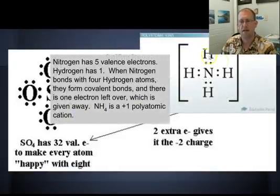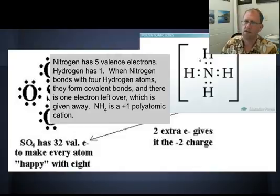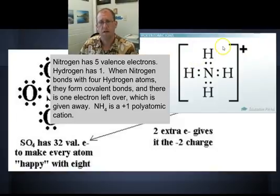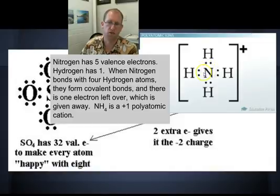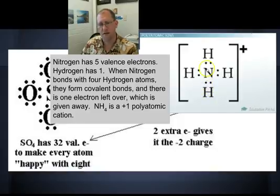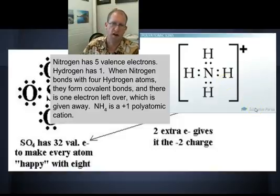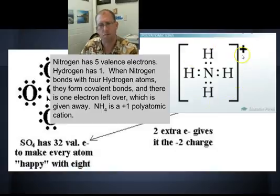Just another example — this is ammonium. Ammonium is one of the few examples of a positive polyatomic ion. One nitrogen forms a covalent bond with four hydrogens. Nitrogen has five valence electrons; each hydrogen has one, so 4 + 5 = 9 electrons, but it only needs eight to be happy. So it kicks out the one extra electron — it's fired and goes flying off into the environment. NH4 is now a plus one — a positive polyatomic ion.